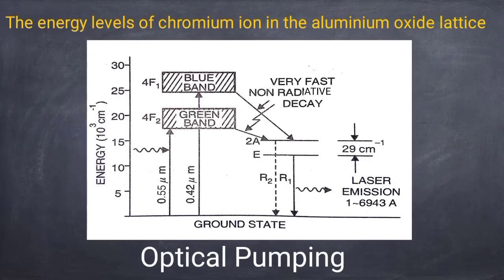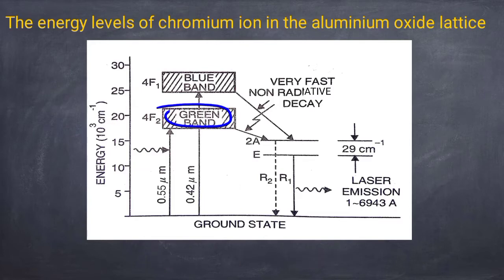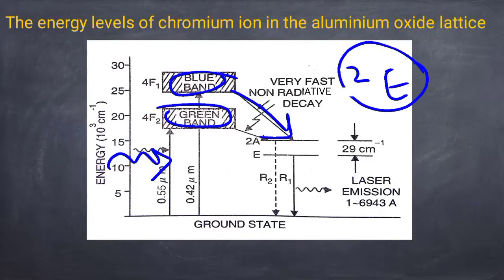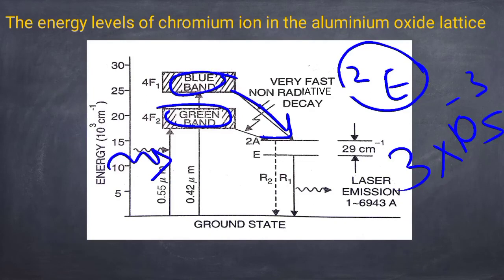The pumping used in ruby laser is optical pumping. Chromium ions get excited to these pump band levels by absorbing energy from the xenon flash lamp, followed by fast non-radiative decay from these bands to the 2E state. This 2E state is a metastable state with a lifetime of 3×10⁻³ seconds, which is very high.